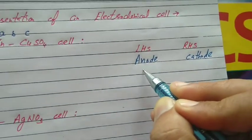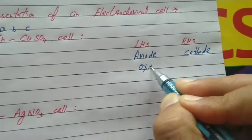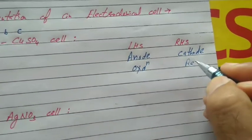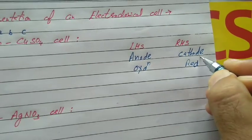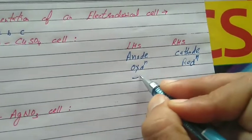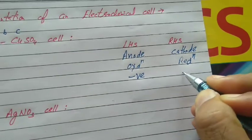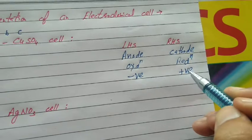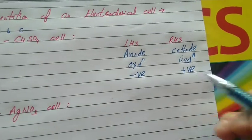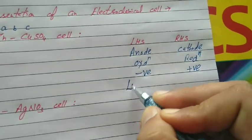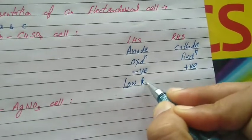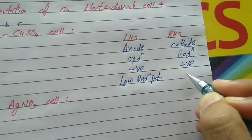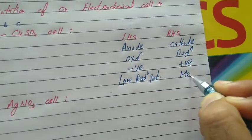What happens at anode? Oxidation — O comes first alphabetically, then R. At cathode, reduction. Anode is the negative terminal and cathode is the positive terminal. Again, N comes first compared to P alphabetically. Anode is the electrode having lower reduction potential, and cathode is the electrode having more reduction potential.